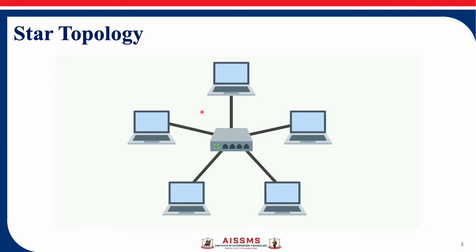Here you can see the diagram of star topology. There are devices connected to a central device, which is a switch or hub. If this central device fails, the whole network will fail automatically. And if you want to add one new device to this central device, it will be easily updated, or if you want to remove it, it can be easily removed.